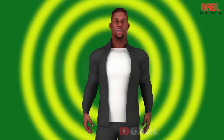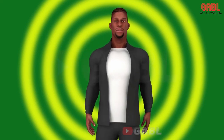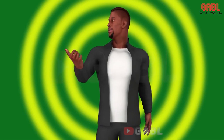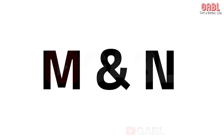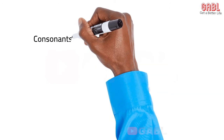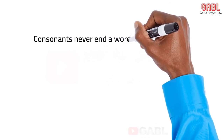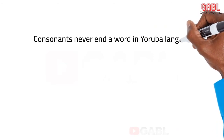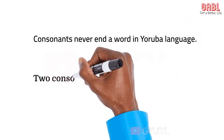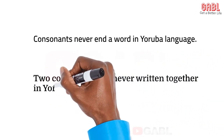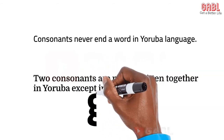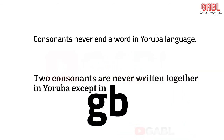Take note of these: consonants are never marked in Yoruba language. There is no tone mark on them except those representing vowels, namely MI and NI. Also, a consonant never ends a word in Yoruba language, and two consonants are never written together in Yoruba except in GB, as you can see, which represents a letter of the alphabet.